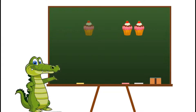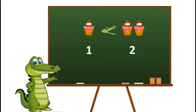On one side we have one cupcake and on the other side we have one, two cupcakes. So on which side will my mouth be closed? Well done! We know that one cupcake is less than two cupcakes, so my mouth will be closed towards the smaller number one. So one is less than two.